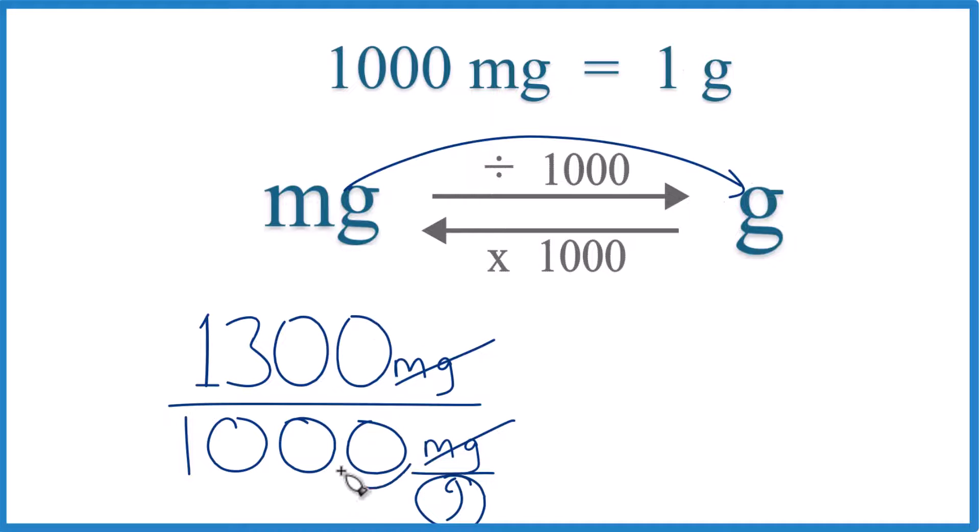So let's move the decimal place 1, 2, 3. So now we're just dividing by 1 up here, 1, 2, 3.